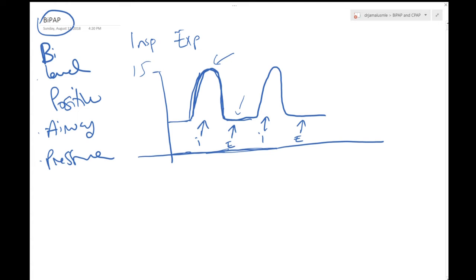So this could be, let's say, 15 and this is 5. And this is what they usually say: the BiPAP settings are 15 over 5. What that means is that the higher number is the IPAP or inspiratory positive airway pressure. The lower number is the EPAP, which is the expiratory positive airway pressure.